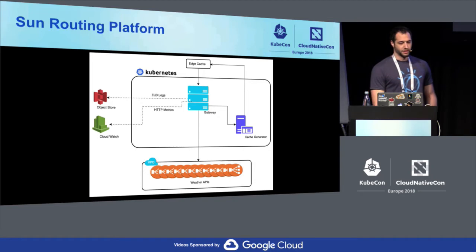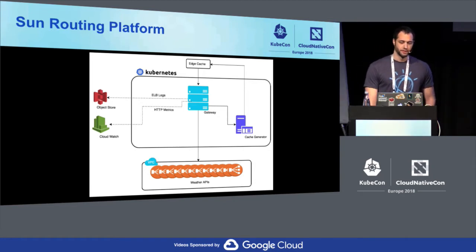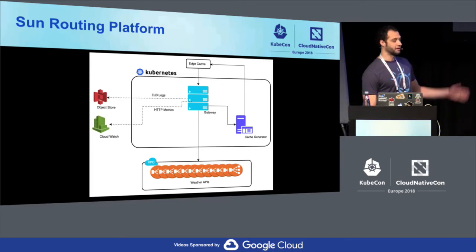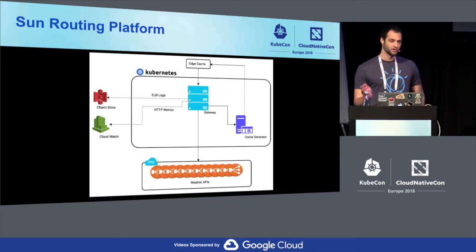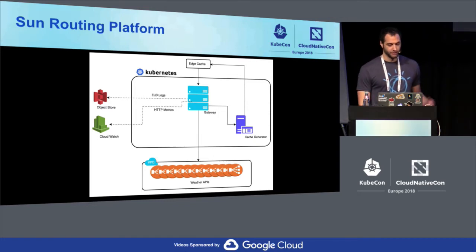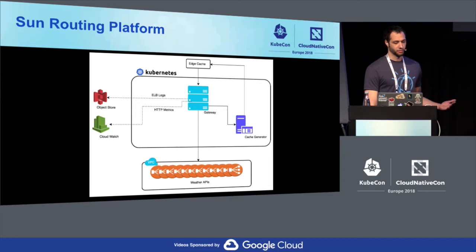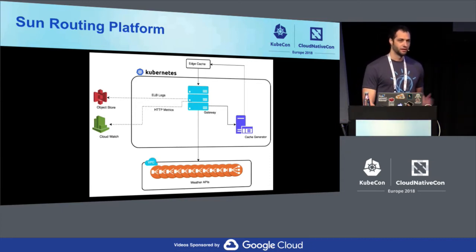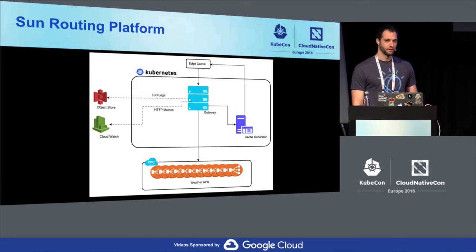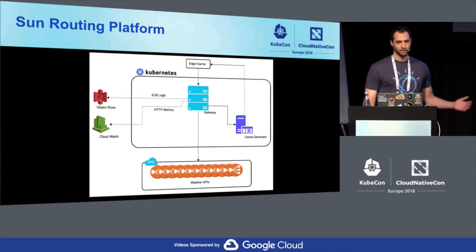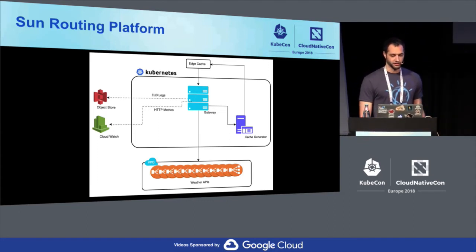This is a very simplified diagram of the routing platform. Traffic comes in from the edge cache into our gateway, which intercepts it and sends it to our cache generator. The cache generator responds on behalf of the weather API with a cache template. That template goes back to the edge cache, and depending on whether it's cached, the edge cache may make another request to the actual weather API. If it's cached, it just serves the cached data.